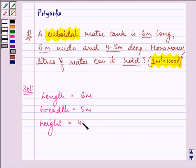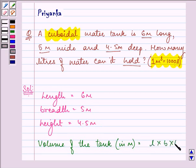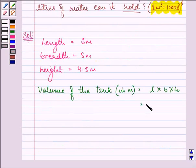Let us quickly find out the volume of the tank in meters. It will be length into breadth into height, that can be written as 6 into 5 into 4.5.